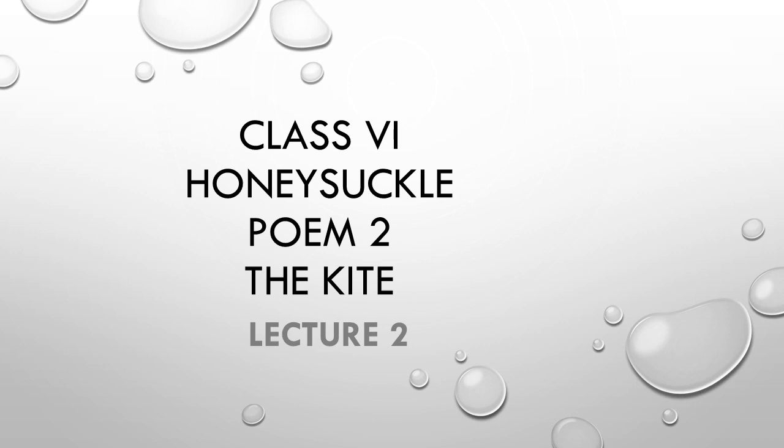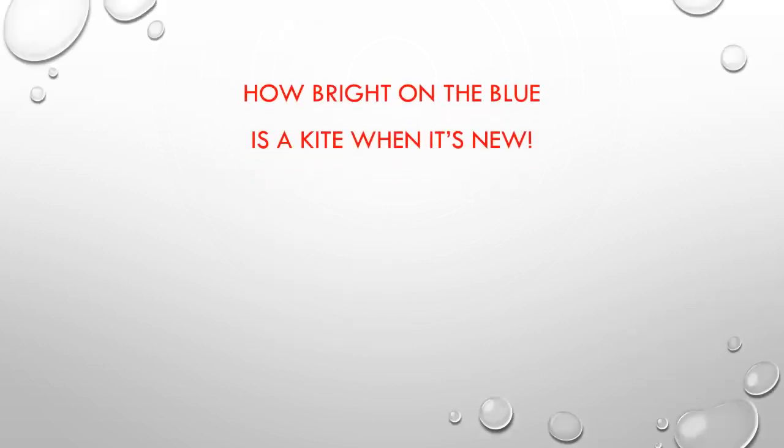Let's begin with the line by line description — a brief description in a short manner. 'How bright on the blue is a kite when it's new?' It means the kite enhances the beauty of the sky, that is blue, when it is being flown in the sky.